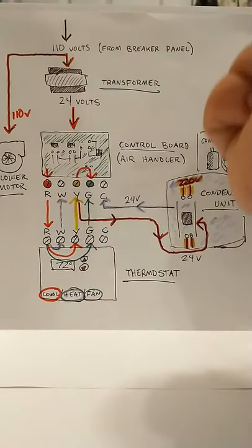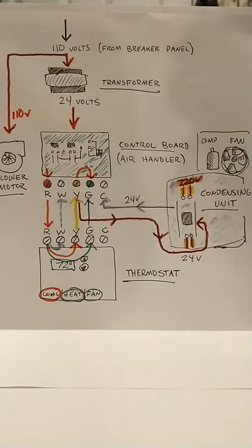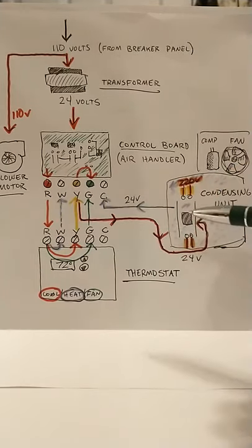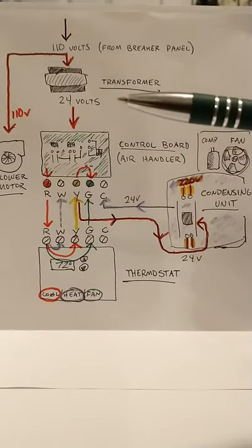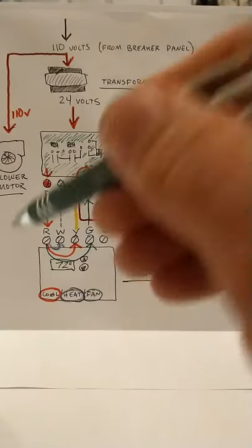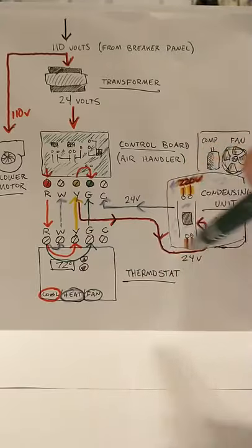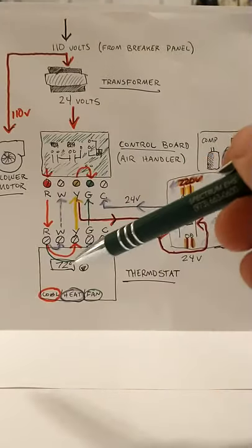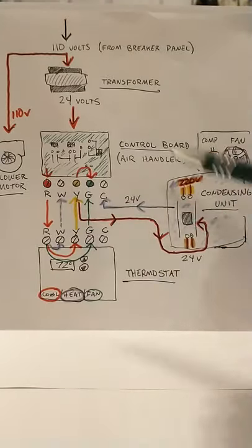Your thermostat is kind of like a light switch. It turns circuits on and off. The only difference between a thermostat and a light switch is that a light switch will just turn one circuit on and off, whereas a thermostat can actually control several different circuits for cooling, heating, fan only, or off.